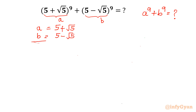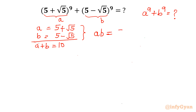I will add both equations and get A plus B equal to 10. Now from this set of equations I will also take the product A times B, which will be (5 plus √5) times (5 minus √5).